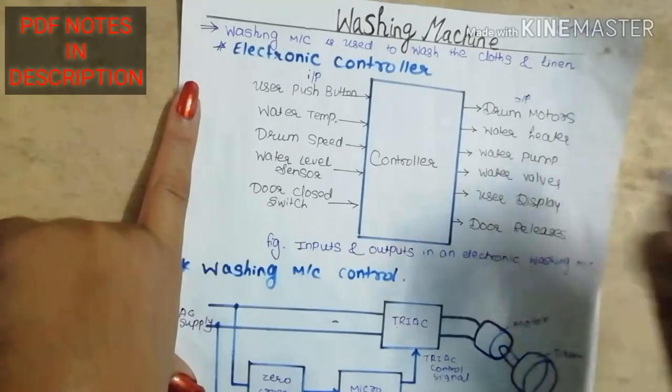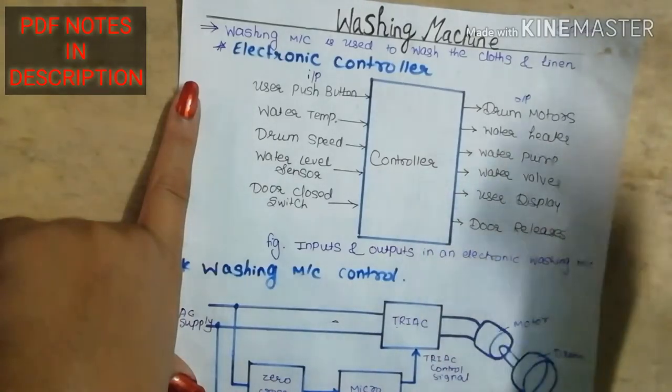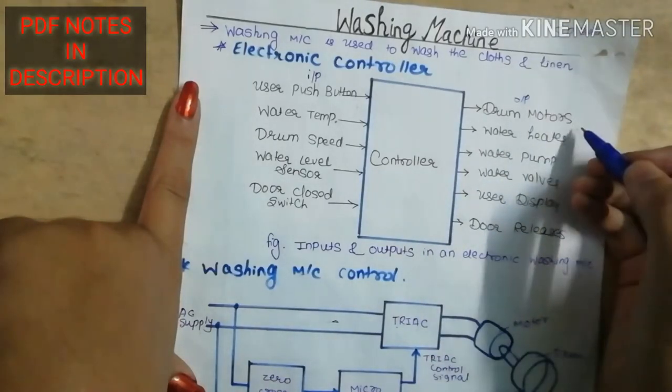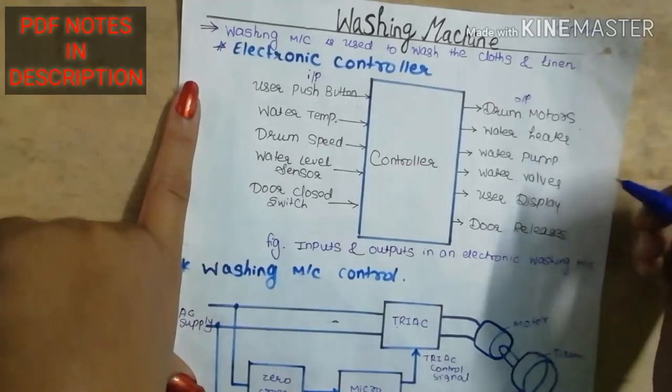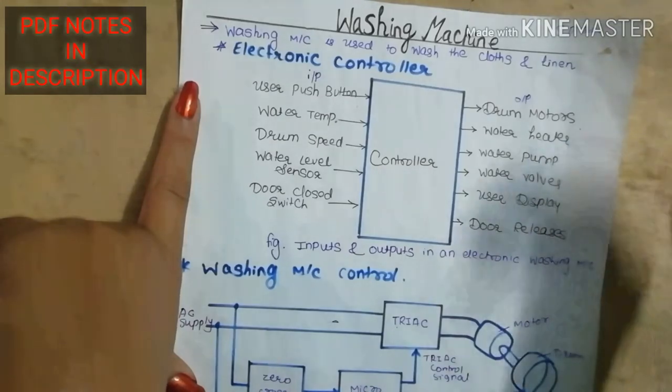We will check out the output. What is the procedure? Drum, motor, water heater, water pump, water valves, user display, and door release or not.